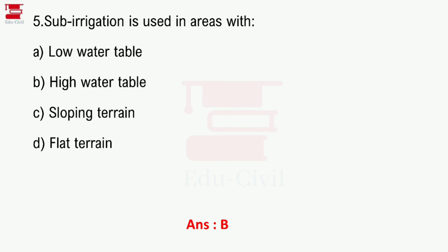Question 5: Sub-irrigation is used in areas with what condition? Options are high water table, low water table, sloping terrain, or flat terrain. Option B is correct — sub-surface irrigation is used in areas with a high water table, as the water rises through the root zone.